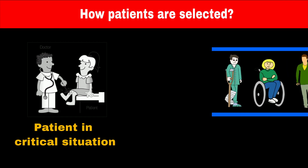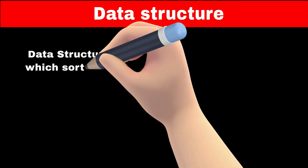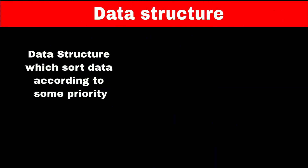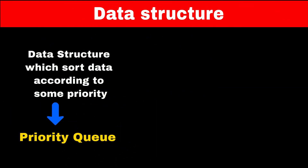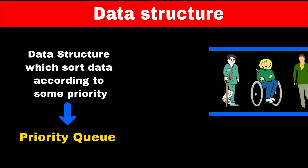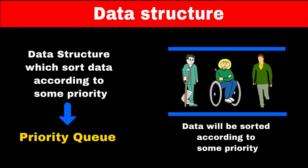In other words, the patient with the most critical situation is at the front of the queue, and the patient who doesn't need immediate medical attention will be last. So we need a data structure that will sort the data according to some priority. This data structure is called a priority queue. Each element in a priority queue has some priority assigned to it, and the priority queue will sort the data according to that priority.